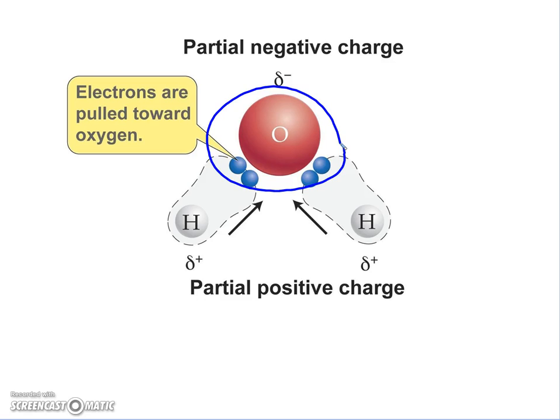That means hydrogen is slightly or partially positive. The symbol you see here represents a partial or slight charge, and it looks like a delta—an 8 that isn't finished. We say hydrogen is slightly positive; it's not a true ionic positive, just slightly positive. On the other side, oxygen has the electrons closer to it, so we say that oxygen is slightly negative.